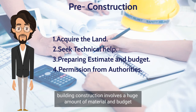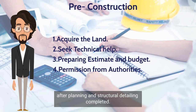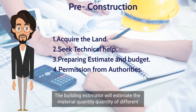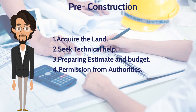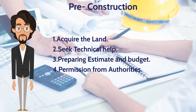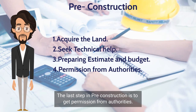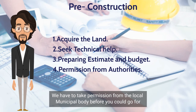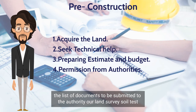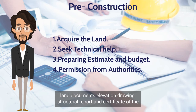The third step is to prepare an estimate and budget. Building construction involves a huge amount of material and budget. After planning and structural detailing are completed, these details are transferred to the building estimator, who estimates material quantities and prepares an abstract sheet showing the cost of construction. The last step in pre-construction is to get permission from authorities — we have to take permission from the local municipal body before going ahead with construction.